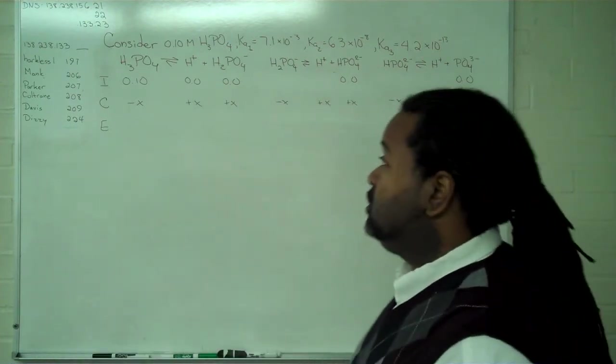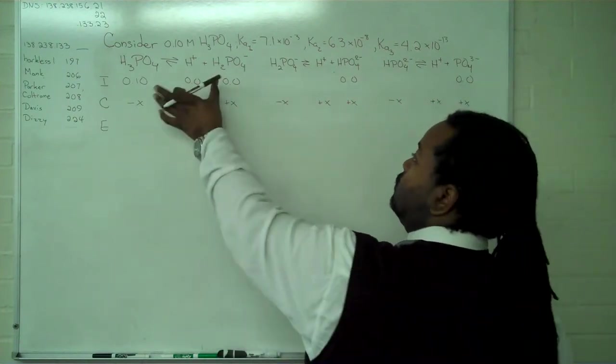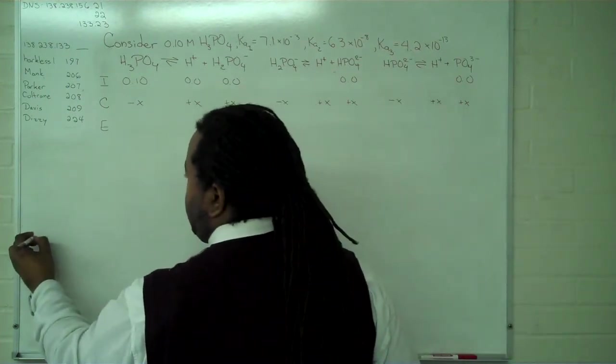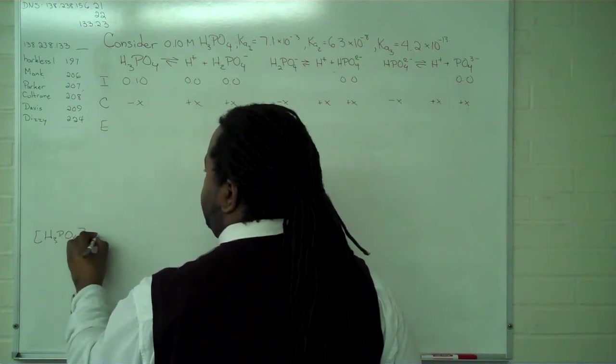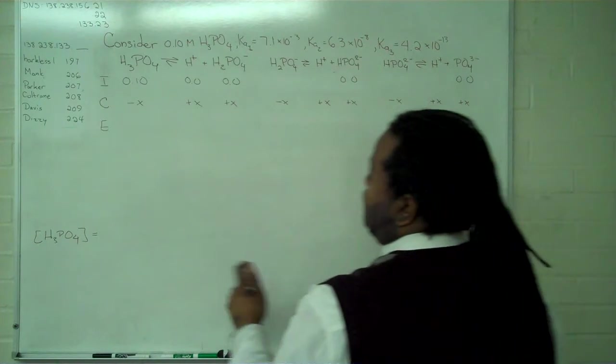So we assume stepwise dissociation, meaning that we will need to solve for the equilibrium problem for the first dissociation, which will give us the first concentration we're looking for. The information from here, we're going to the second dissociation.